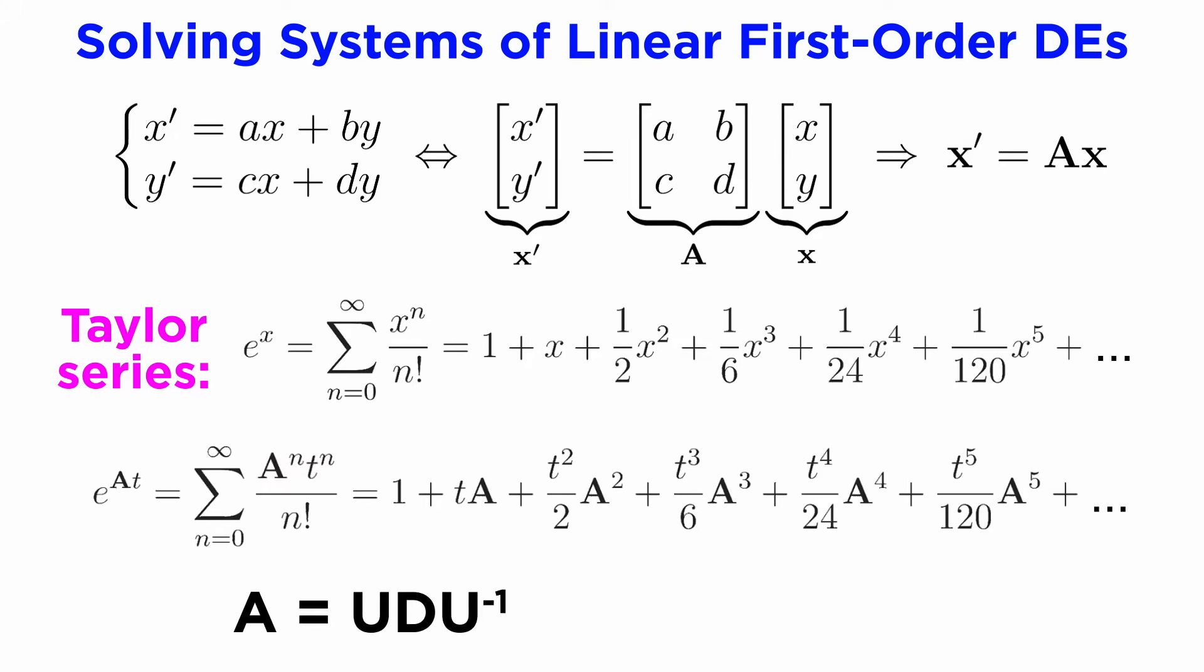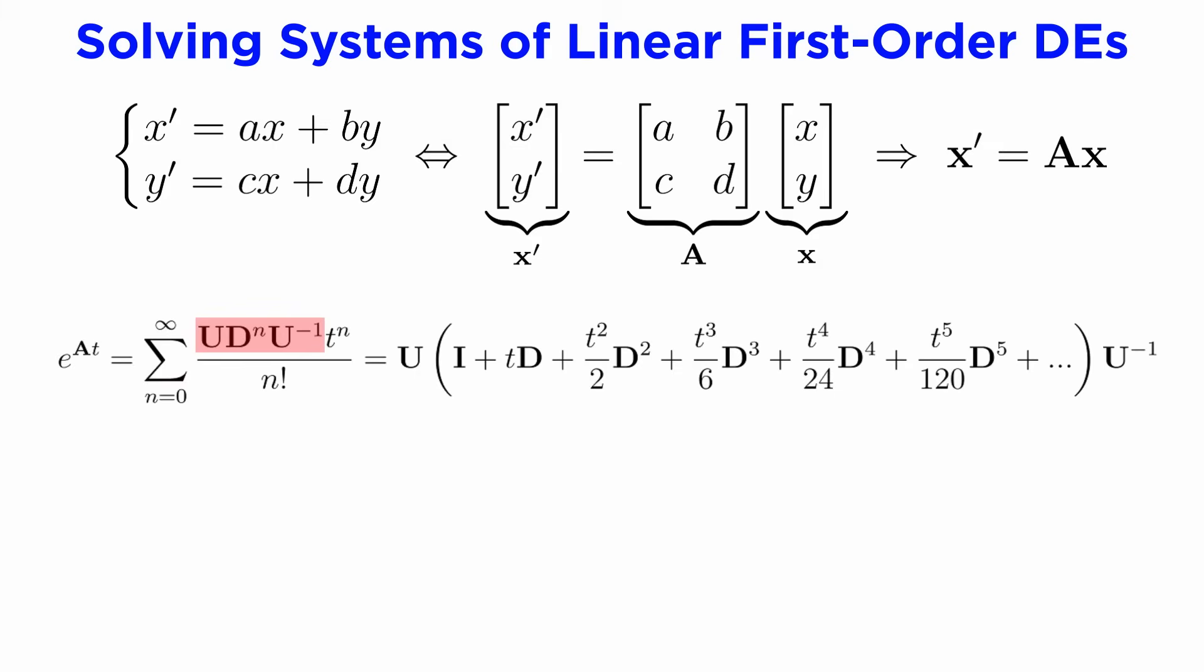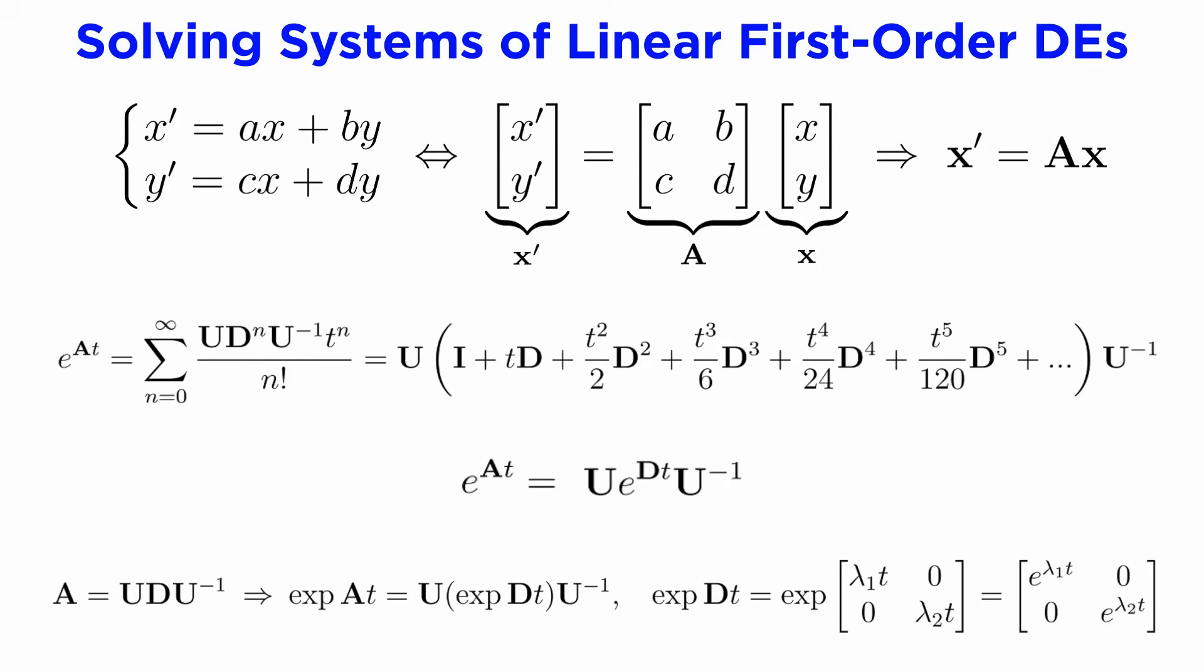If A is a diagonalizable matrix, we can write the nth power of A in terms of the eigenvectors u and eigenvalues d as A to the n equals u times d to the n times the inverse of u. Replacing all the powers of A in our series with this leads to the useful fact that the exponential of a matrix AT is equal to u times the exponential of dt times the inverse of u.